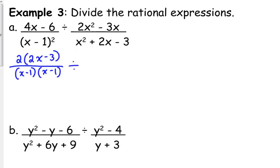I'm going to leave it as division for the moment. I'm going to factor first, and then I'll flip it over. So when we factor the first numerator, we take out an x, we're left with 2x minus 3. When we factor the second denominator, that would be x plus 3 times x minus 1.